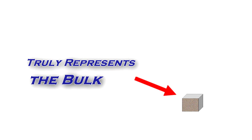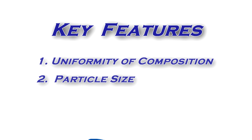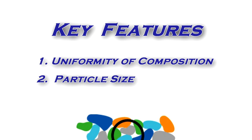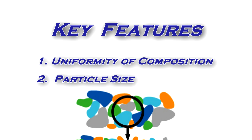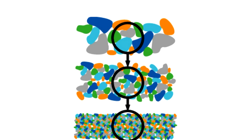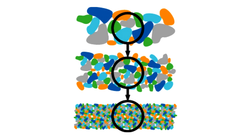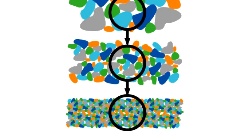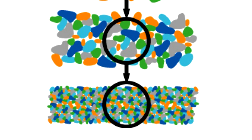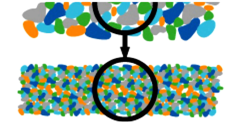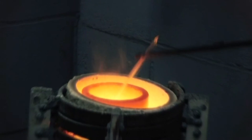Uniformity of composition and particle size of the bulk material are the key features which lead to selecting the processes required to generate true samples. To maximize uniformity of composition, bulk materials are most often processed prior to sampling.